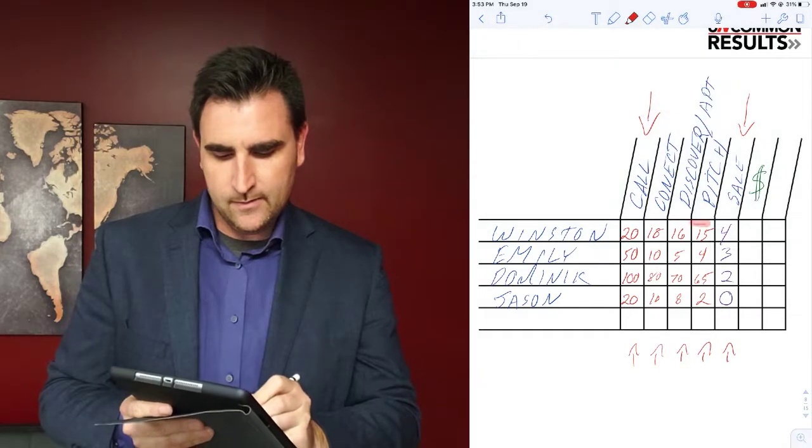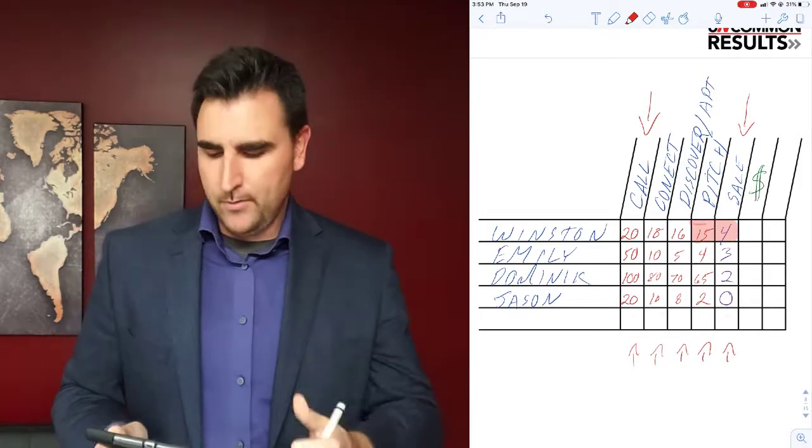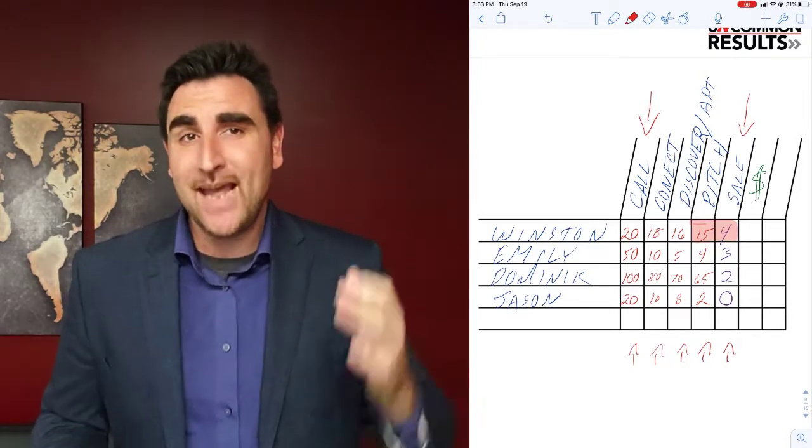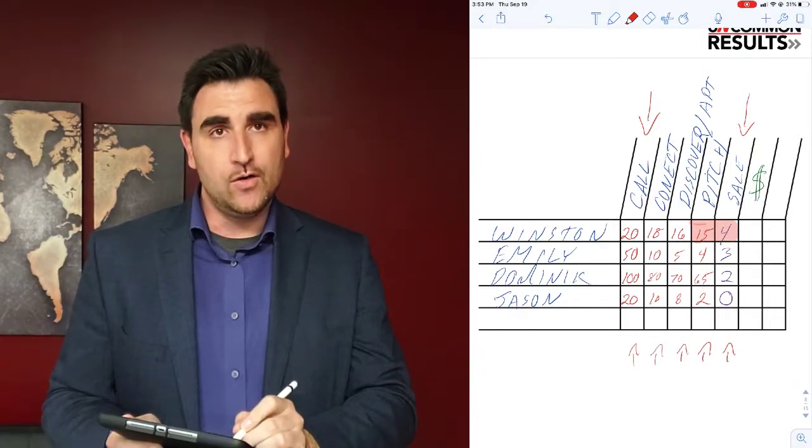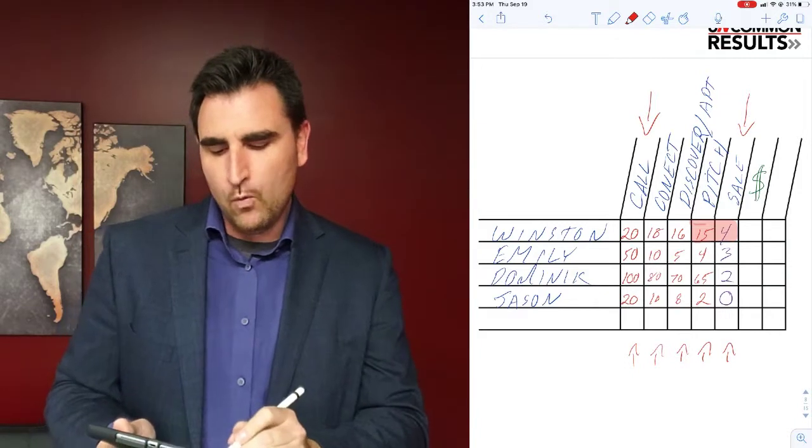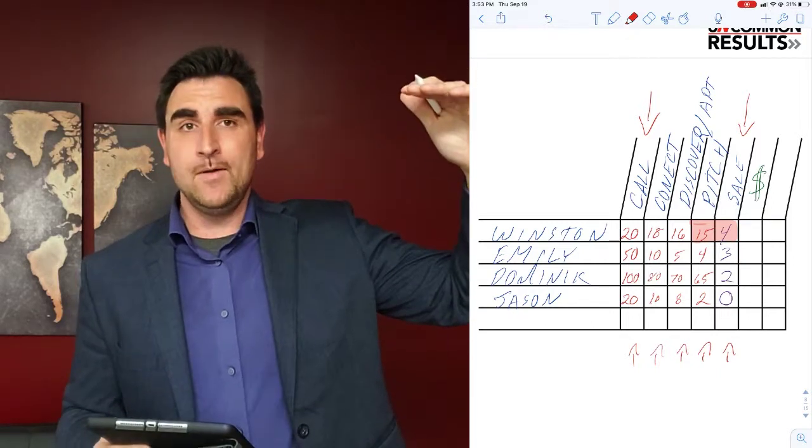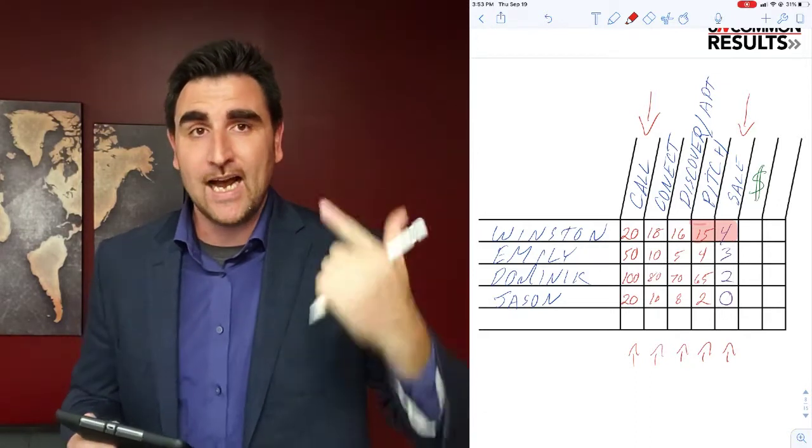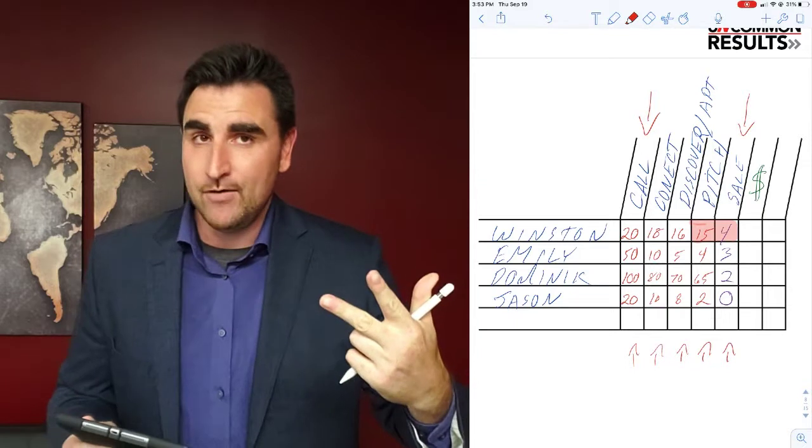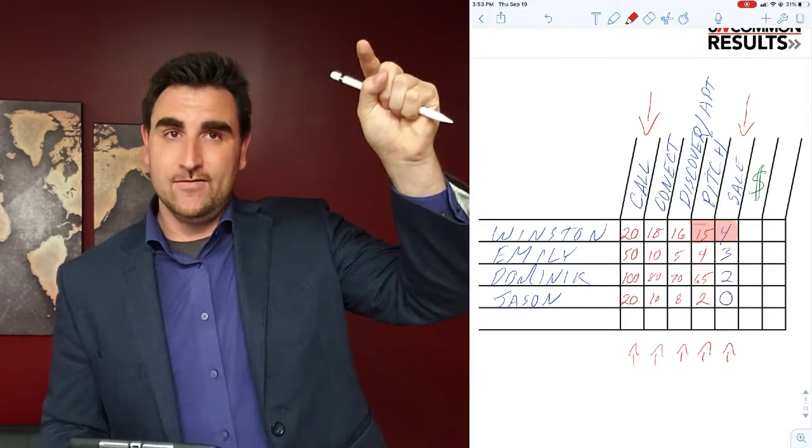But we can also see Winston's weakness. Even though he does a great job calling people, connecting with them, discovering their need and making a pitch, he's got a very low close ratio compared to his other stats. If we can figure out why only four out of 15 are actually closing, we can drastically increase our income without changing anything else.